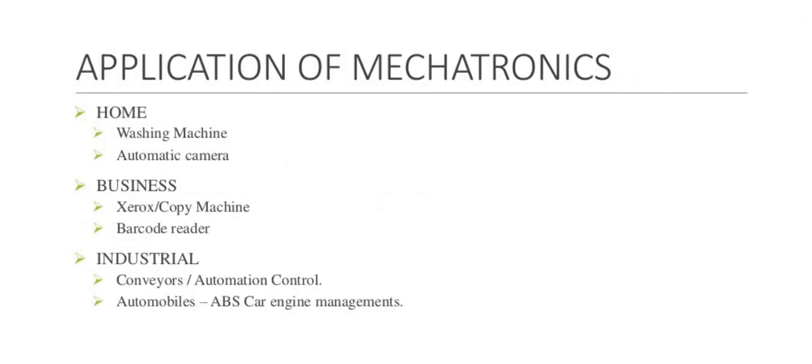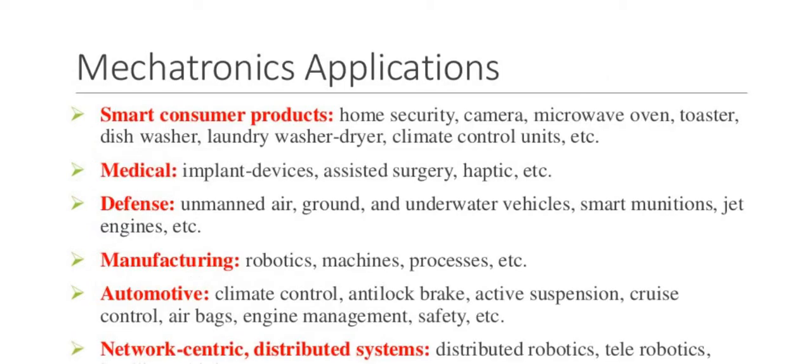Applications of mechatronics: In the home — washing machines and automatic cameras. Business — Xerox copy machines and barcode readers. Industrial — conveyor, automation control. Automobile — ABS, car engine management. Mechatronics can also be used in smart consumer products, medical, manufacturing such as robotics and machine processes, automotive, network centers, distributed systems, distributed robots, robotics, and tele-robotics. These are the major applications of mechatronics systems.